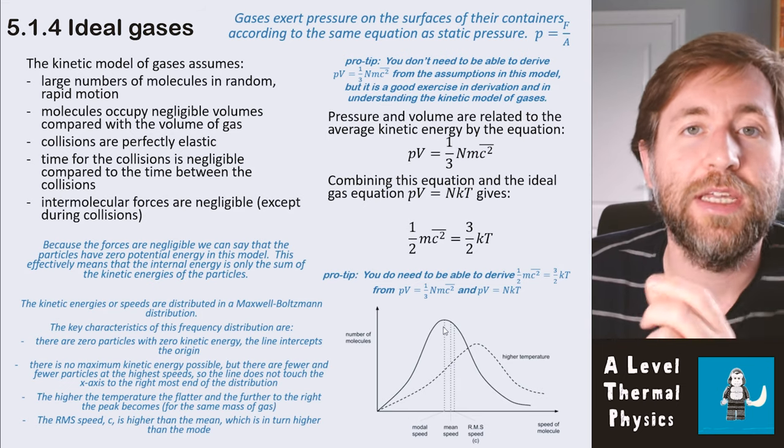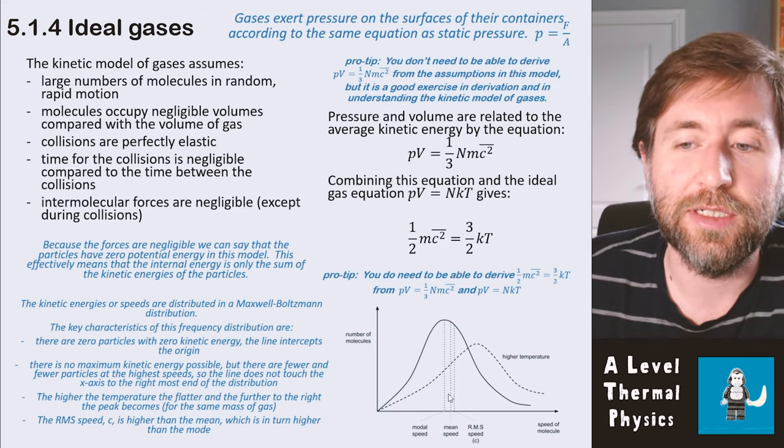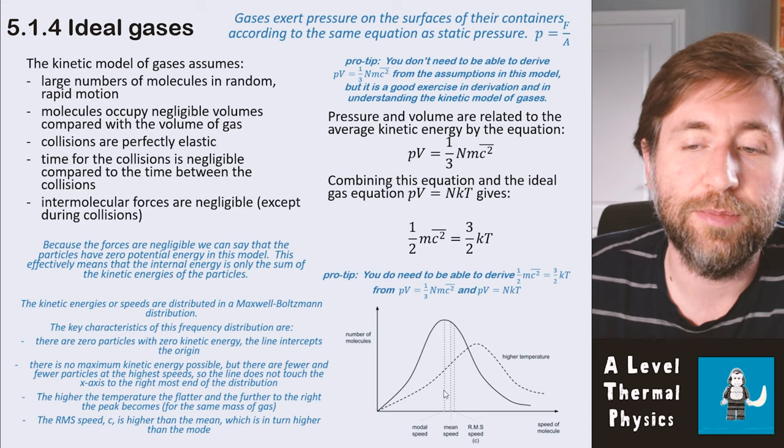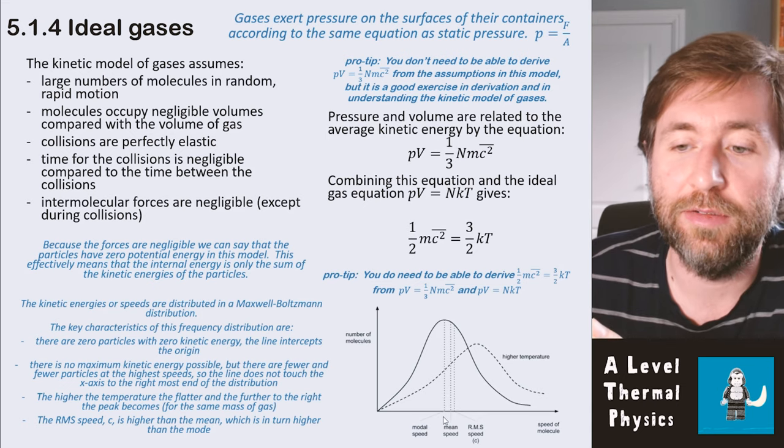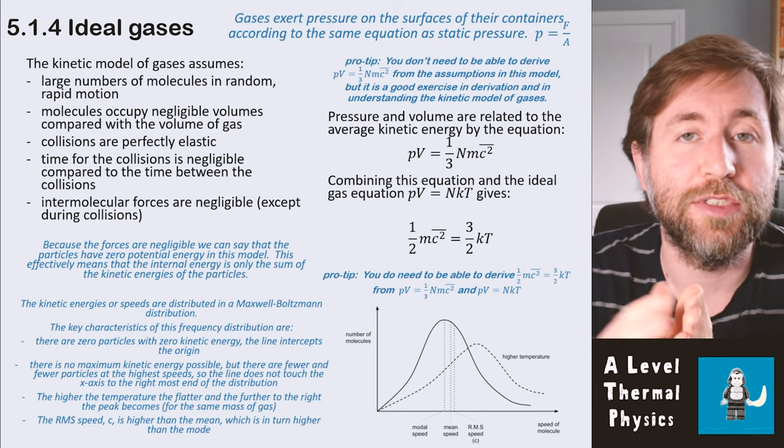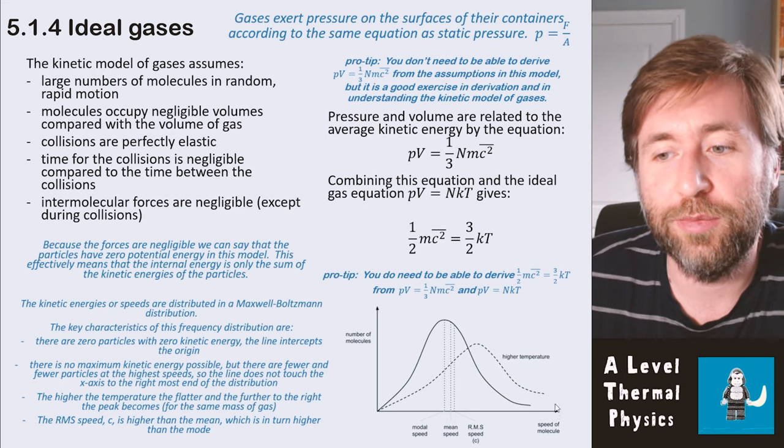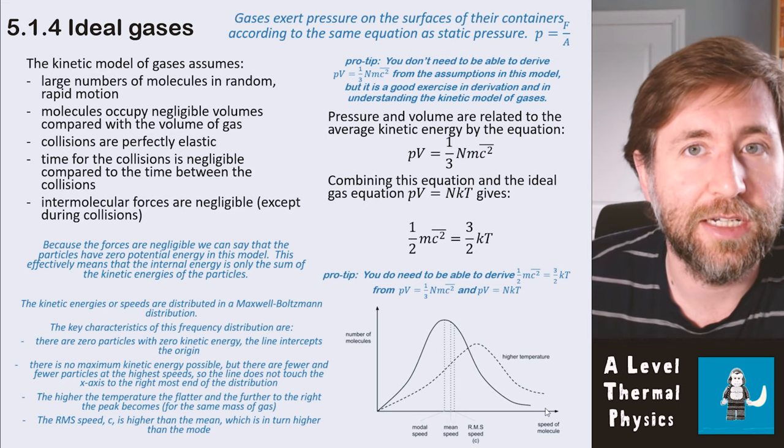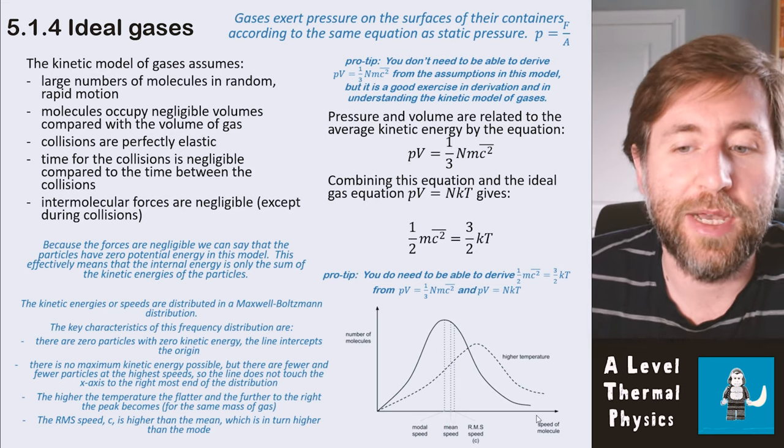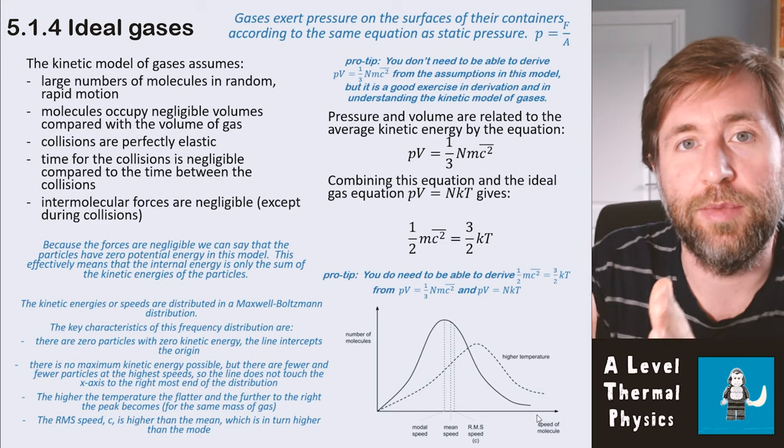Now I've talked about averages so far, but there are three different averages that we're using here. The mode is the most frequent, so that is the peak. So the modal speed is the peak of the graph, wherever the speed is at the peak of the graph. The mean speed in Maxwell-Boltzmann distribution is going to be slightly higher than that because we have the idea that there's zero at zero, but there could be some at very, very high kinetic energies. There's no theoretical maximum. So the mean is going to be slightly above that.